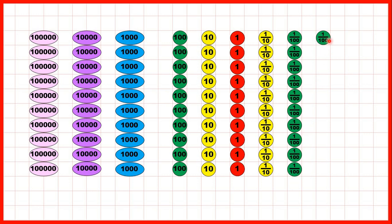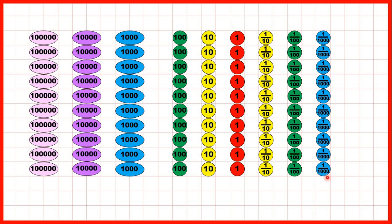If we have one hundredth, we can exchange that for 10 thousandths counters. So we can always exchange a counter for 10 counters from the place value to the right.